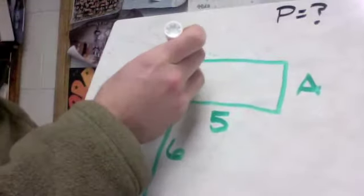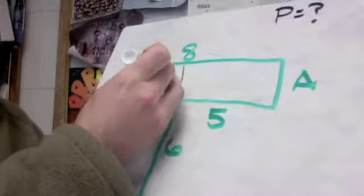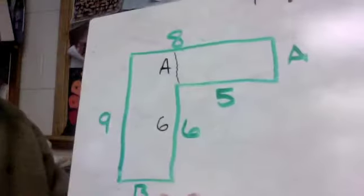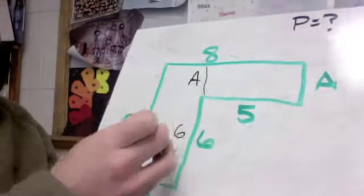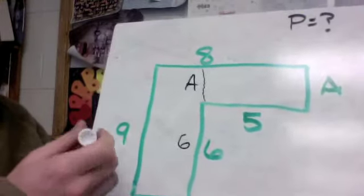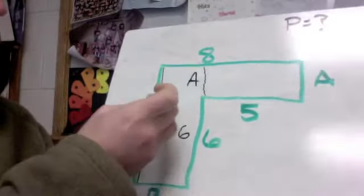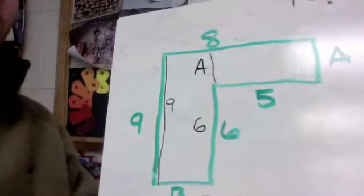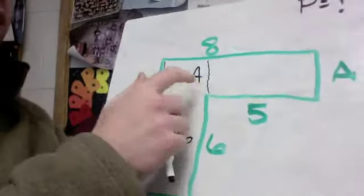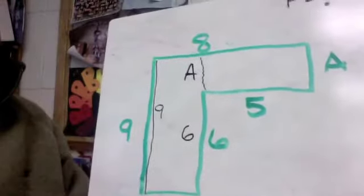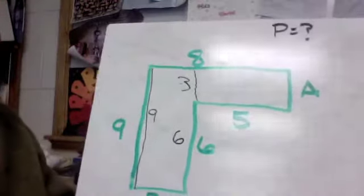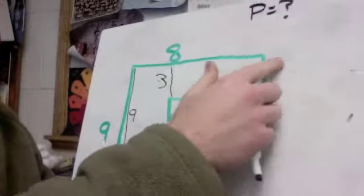A is going to be the same as right here. The rest of this up-and-down line is worth 6. So we have A up to this point and 6 right here. If we find another up-and-down line that represents the whole side — it's this 9 right here. This whole thing is 9 in length, so this has to equal 9 also. 6 plus 3 is 9, so A equals 3.